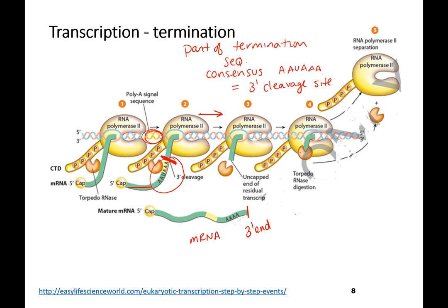Instead, the RNA polymerase keeps on going. There is a protein called RAT1 that cleaves the RNA nucleic acid that keeps being transcribed from RNA polymerase. As RAT1 is coming up to digest and break down the RNA, it eventually reaches RNA polymerase II and knocks it off the DNA. So RNA polymerase II does not stop on its own at the termination site — it has to be forced off the DNA by the RAT1 enzyme.